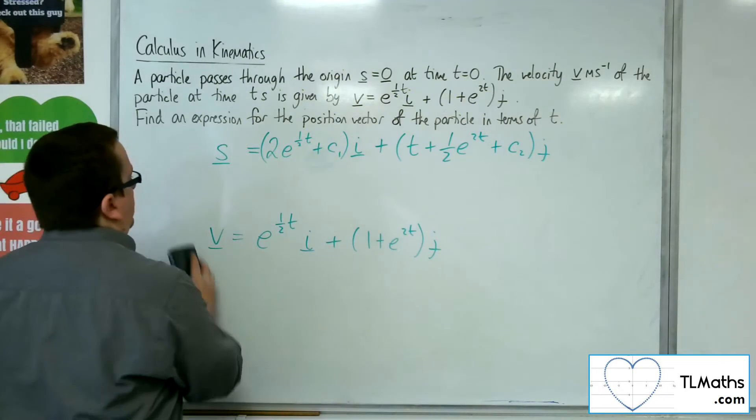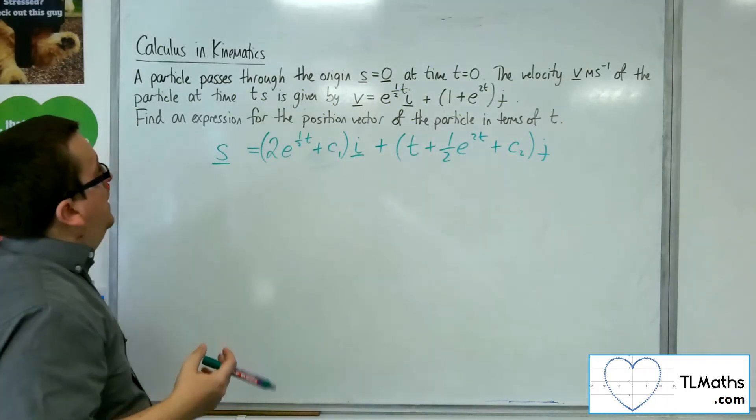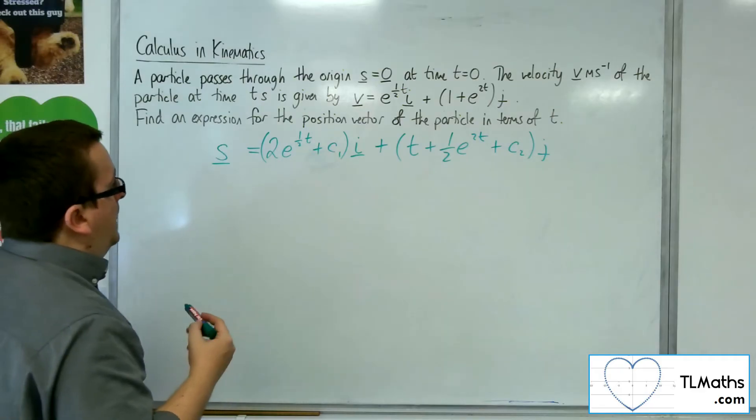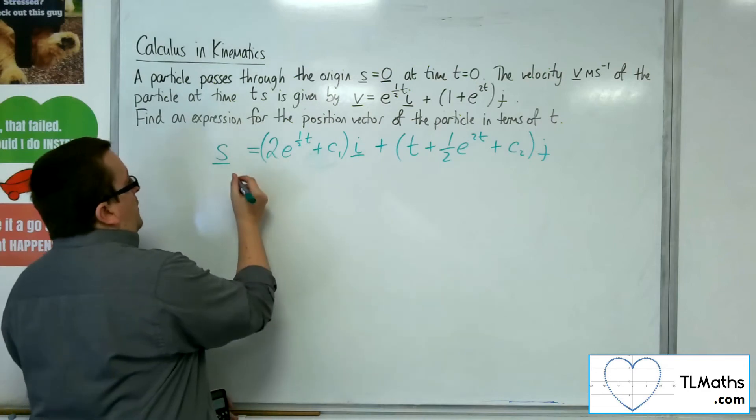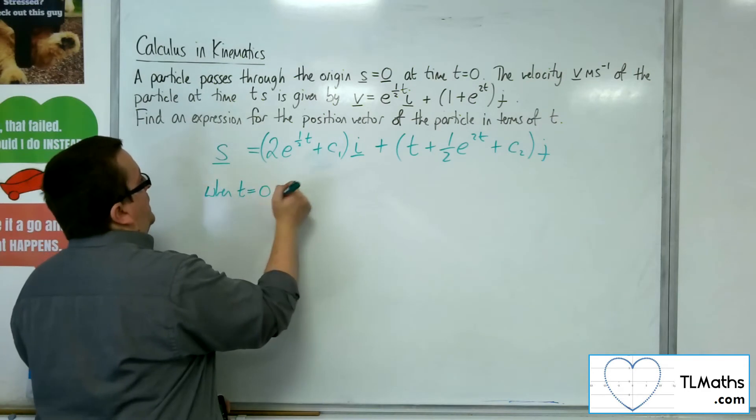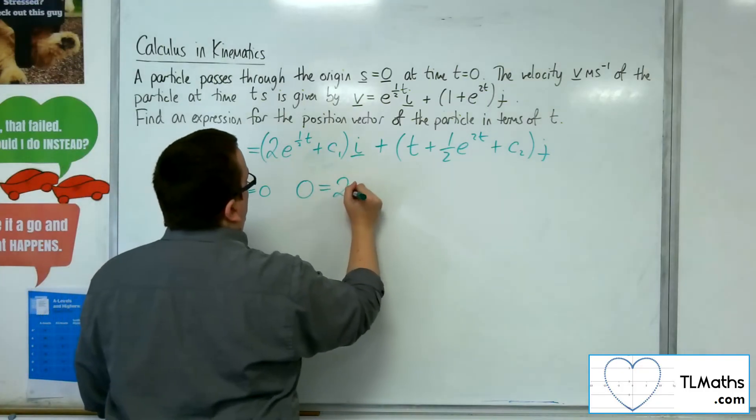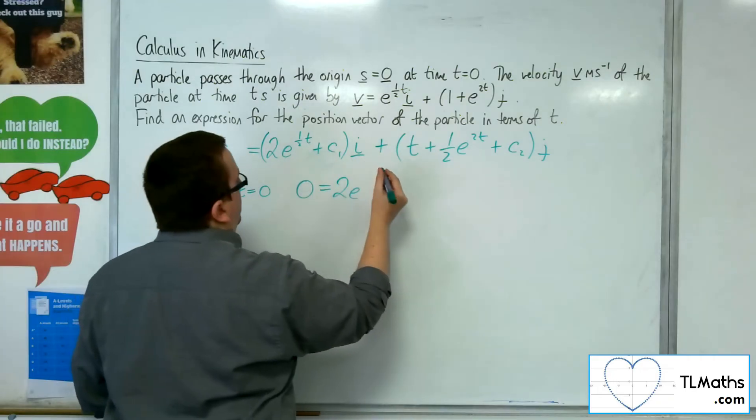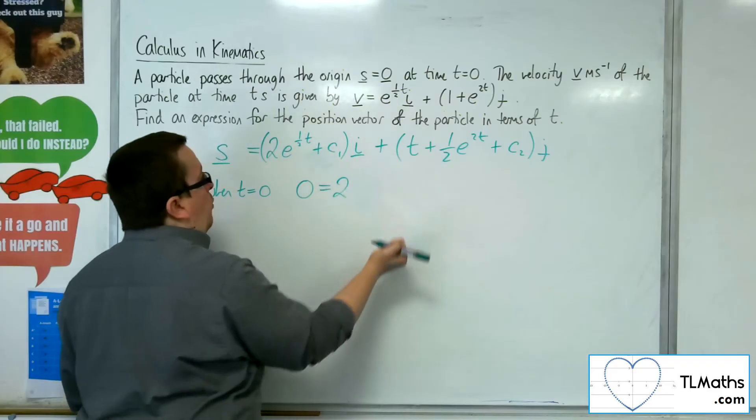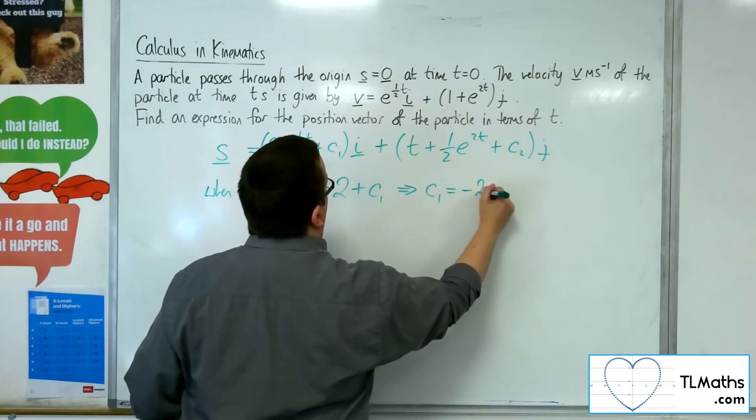So I'm told that the particle passes through the origin at time t is 0. That means that when t is 0, the i component and the j component will both be 0. So 0 is equal to 2e to the half lots of 0, so 2e to the 0, which is just 2 because e to the 0 is 1, plus c1. So that means that c1 is minus 2.